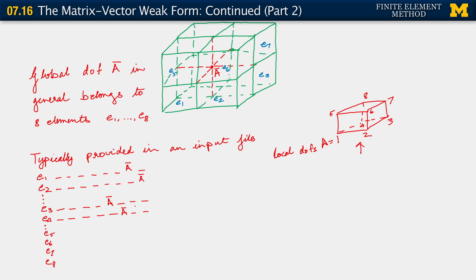Carrying on now for e5, it is degree of freedom three. So one, two, a bar, four, five, six, seven, eight. For element e6, it is number four. So it's one, two, three, a bar, five, six, seven, eight. For element e7, it is actually degree of freedom one. So we have a bar, two, three, four, five, six, seven, eight. And finally for element e8, that is local degree of freedom two. So we would have something else in position one, a bar in position two, three, four, five, six, seven, eight.